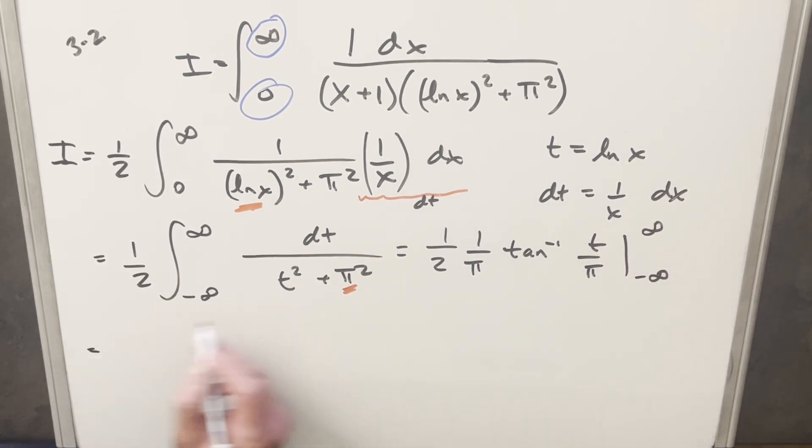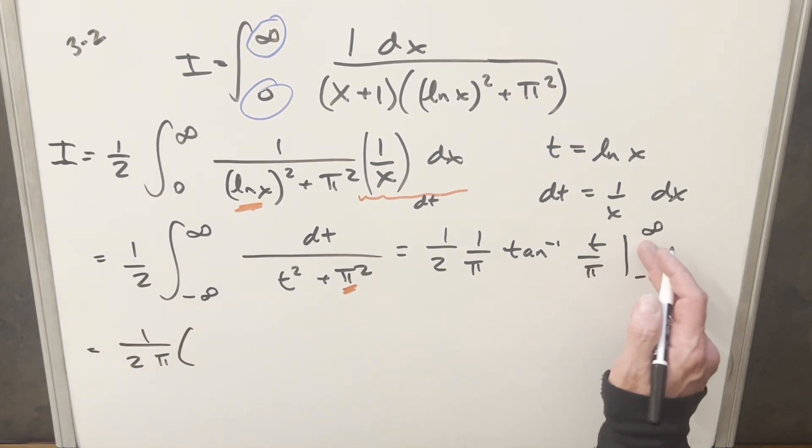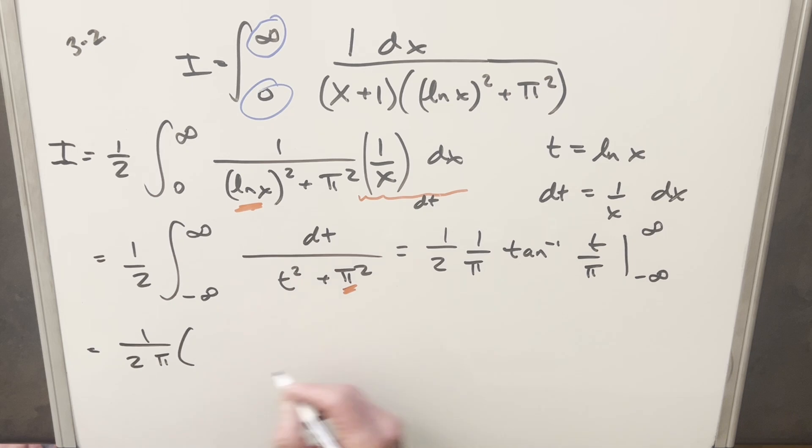So what I'll do is let's come over here. I'll bring, let's factor this out. We'll have this 1 over 2 pi here. Then first, when we plug infinity in here, arctan at infinity, that's going to be pi over 2. Then minus, here we're going to evaluate arctan at minus infinity. That's going to be minus pi over 2. Minus times minus is plus pi over 2 plus pi over 2. This whole thing is going to be pi.